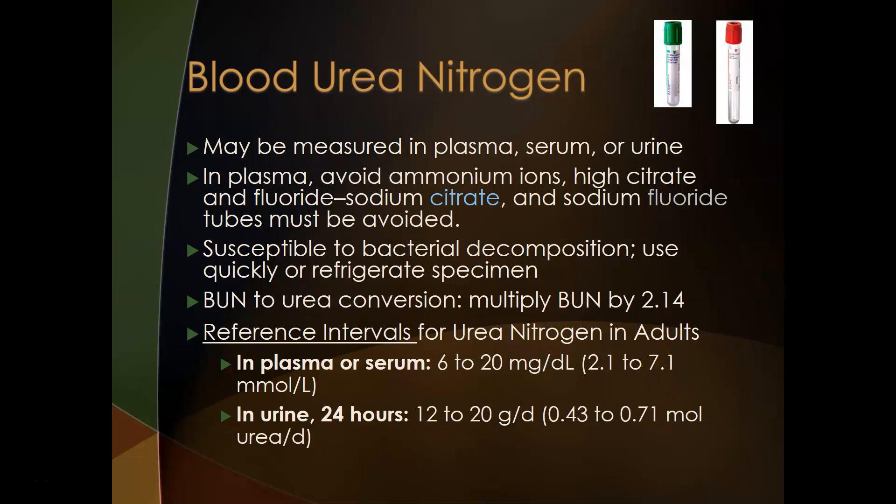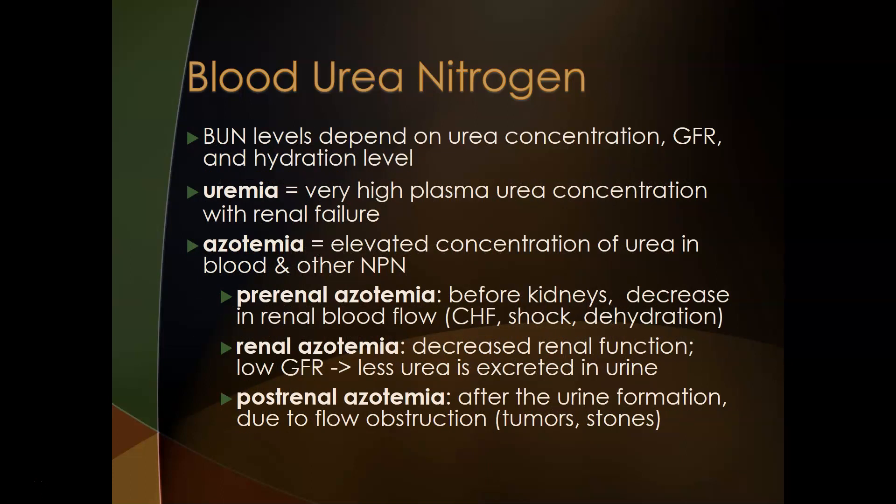The reference intervals for BUN in adults in plasma or serum are 6–20 mg/dL or 2.1–7.1 mmol/L. In a 24-hour urine collection, it's 12–20 grams per day or 0.43–0.7 moles of urea per day. BUN levels depend on urea concentration (related to protein intake), glomerular filtration rate, and hydration level.